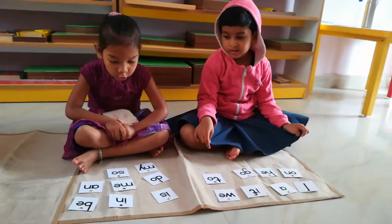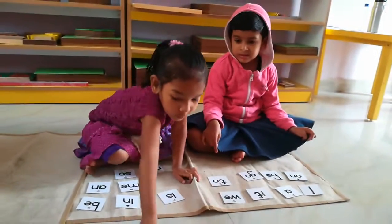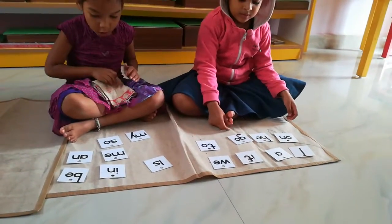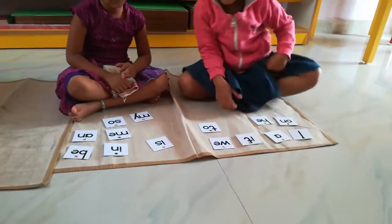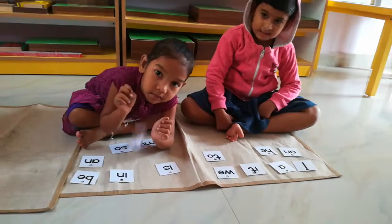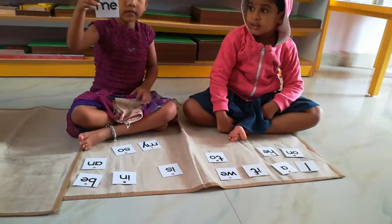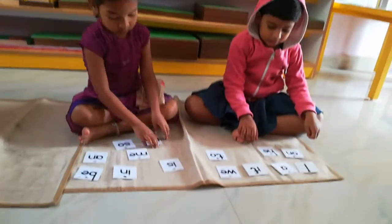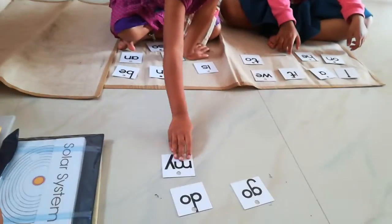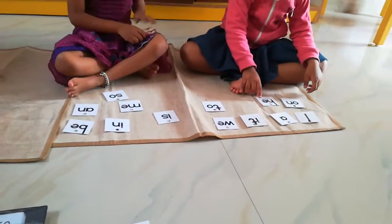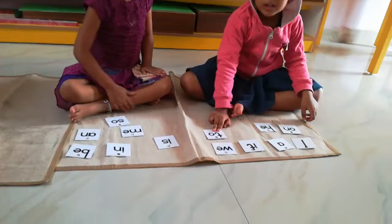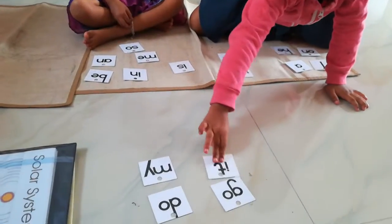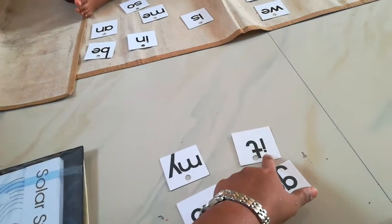Can you give me do? Do. Yes. Can you give me go? Go. Can you give me my? Yes, my. Yes. My. Daddy. Can you give me it? It. It. Me. Read the spelling. It. It.